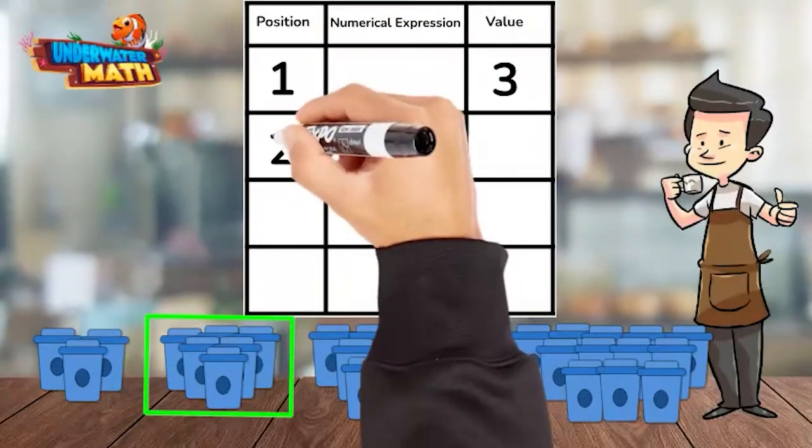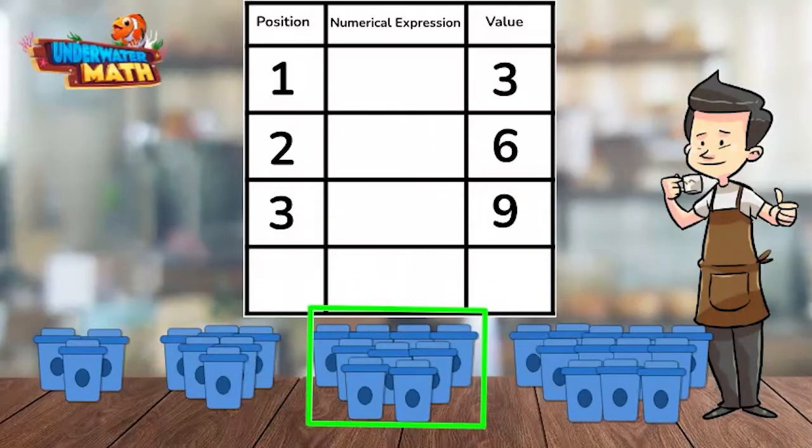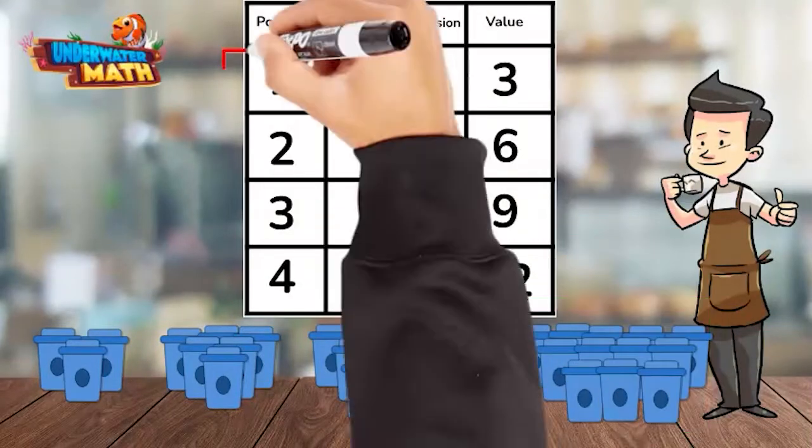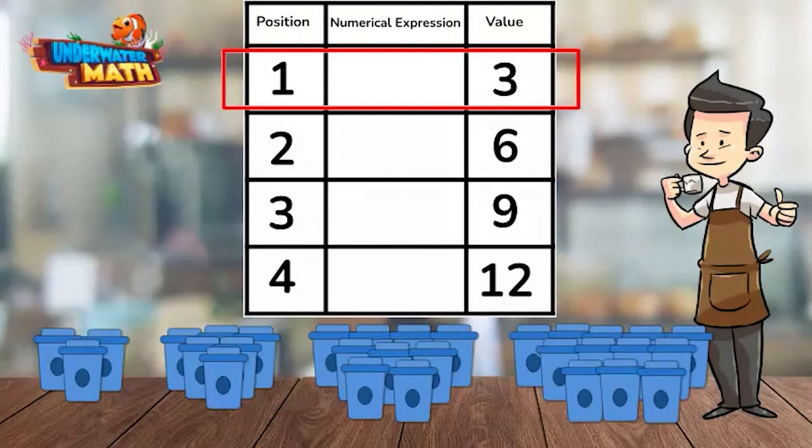To determine the numerical expression, look at the relationship between one and three. We can get from one to three in two ways: by adding two or multiplying by three.